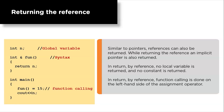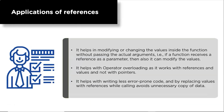Now, applications of references in C++. First, references help in modifying or changing values inside a function without passing the actual arguments — we pass the reference instead, and the function can modify the values. Second, references help with operator overloading because they work with references and values rather than pointer variables. Third, references help write less error-prone code, and replacing values with references while calling avoids unnecessary copying of data.